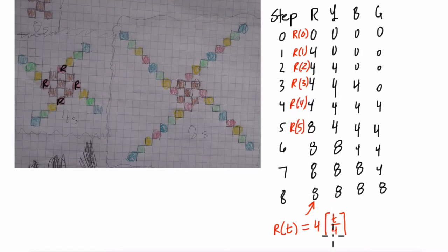If I plug in four, I do four divided by four is one. Rounded up, stays at one. Times four is four. So this works. The red pixels at step four is still four. Remember, these brackets mean round up. They're called ceiling brackets. Then red at step five is an eight. Let's see. Five divided by four is one and a fourth. One and a fourth rounded up is two. Because you round up if there's anything to round. And two times four is eight. It works.